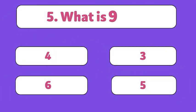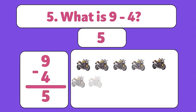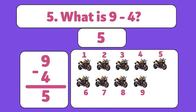What is 9 minus 4? The answer is 5! We start with 9 motorbikes and take away 4. Let's count! 1, 2, 3, 4. We have 5 motorbikes!